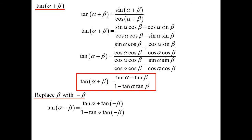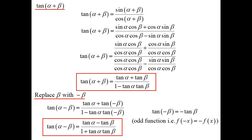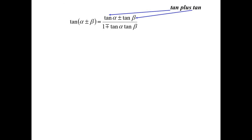Now we replace beta with minus beta. tan(α − β) = (tan α + tan(−β)) / (1 − tan α tan(−β)). Since tan is an odd function, tan(−β) = −tan β, and we get tan(α − β) = (tan α − tan β) / (1 + tan α tan β). I remember this by knowing the positive formula: tan plus tan on 1 minus tan tan. For the negative version, the signs change: the top matches what you're doing, the bottom is different.